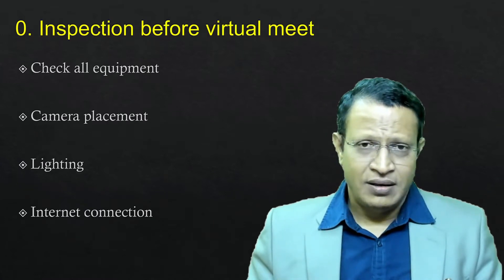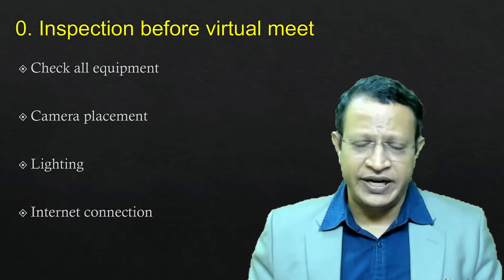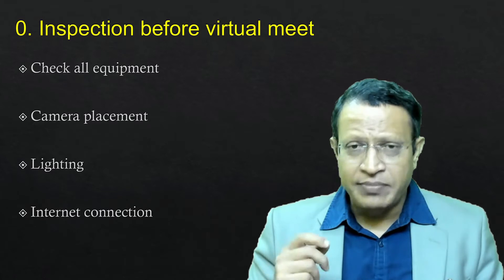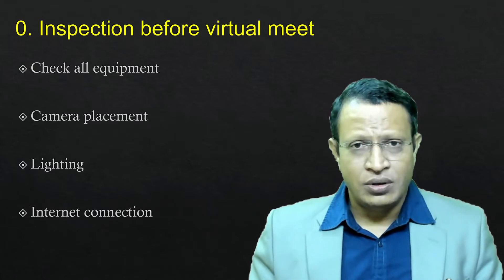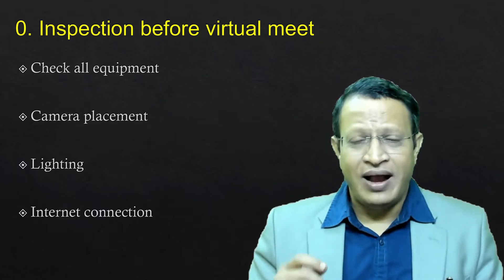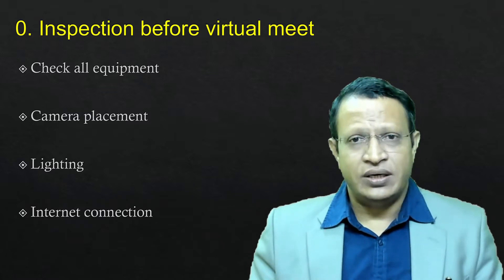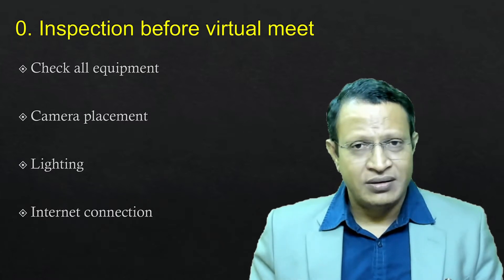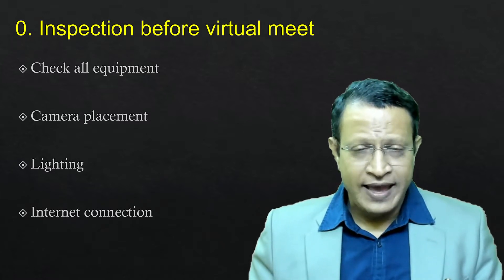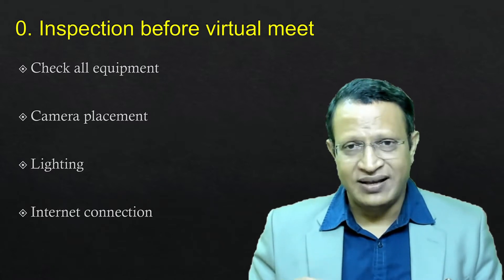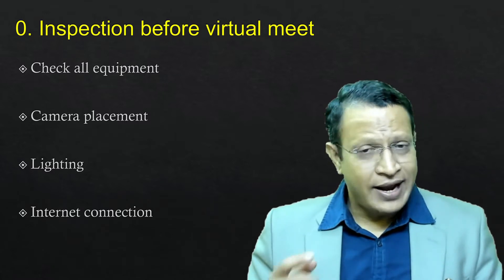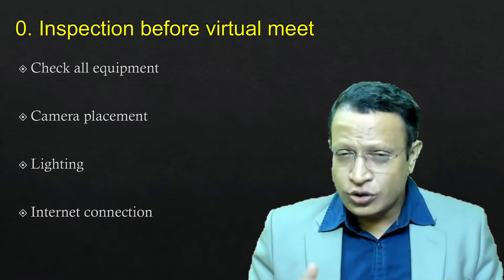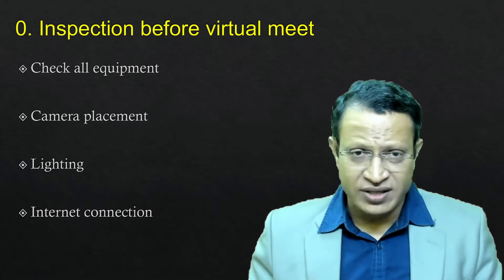First, I-SPIKES: "I" means inspection before the virtual meet. Check all the equipment. Central placement of the camera is essential, and the monitor should be at the level of the camera, so that when you talk, you look into the camera, not into the monitor — otherwise eye contact will not be made. Learn how to look at the camera and speak. Lighting is very essential. Have an internet connection of at least 2 Mbps per second for a good video consultation.